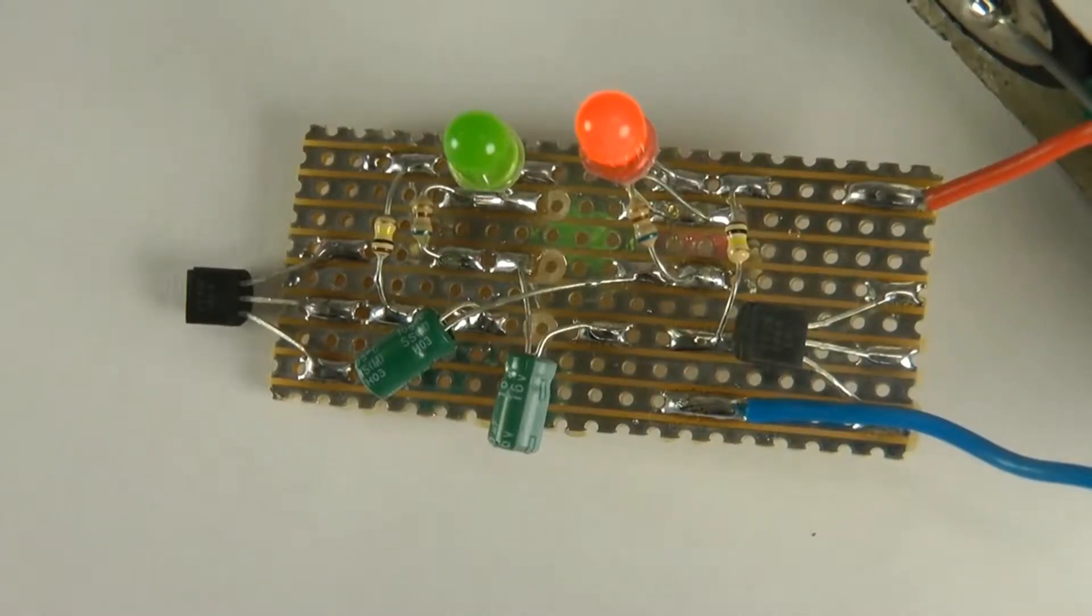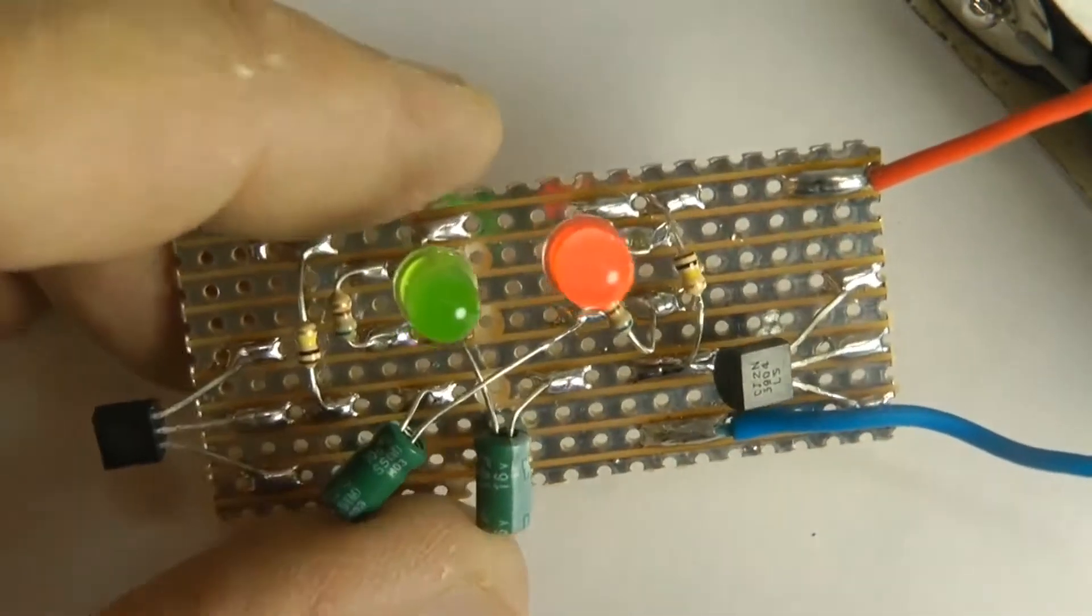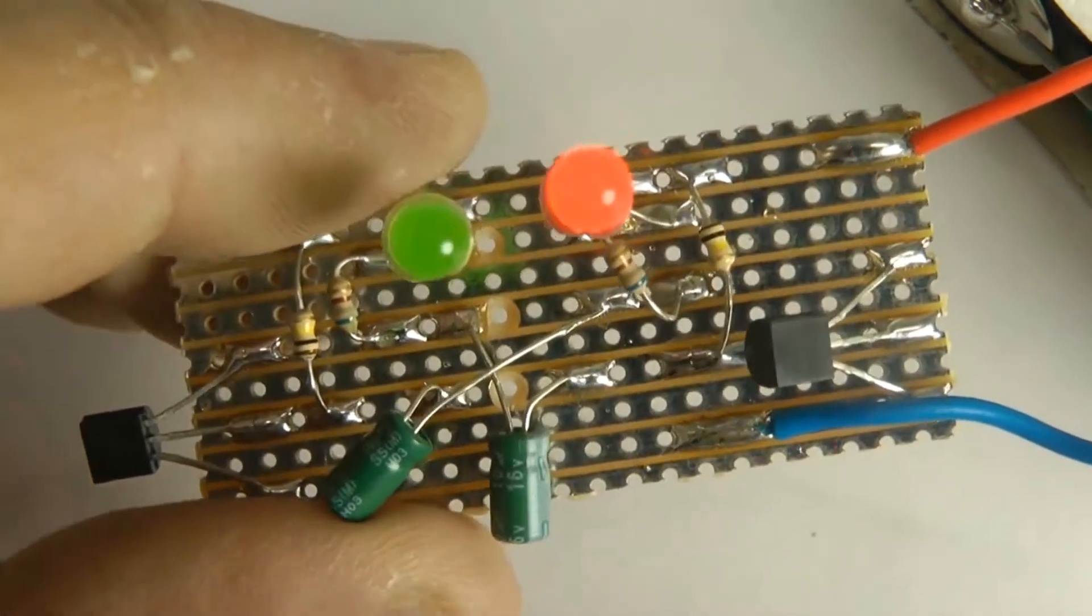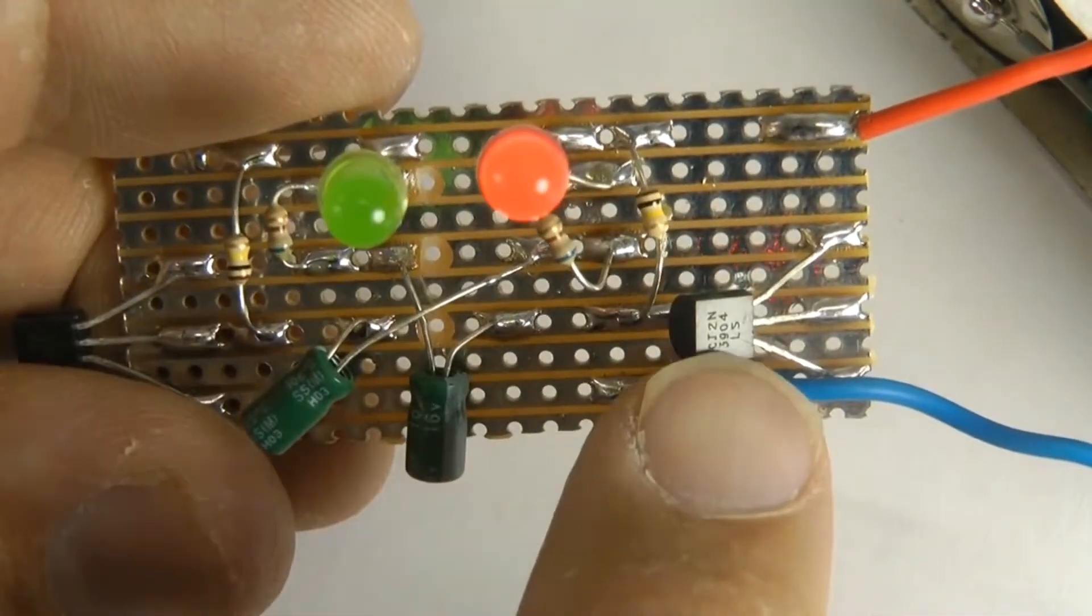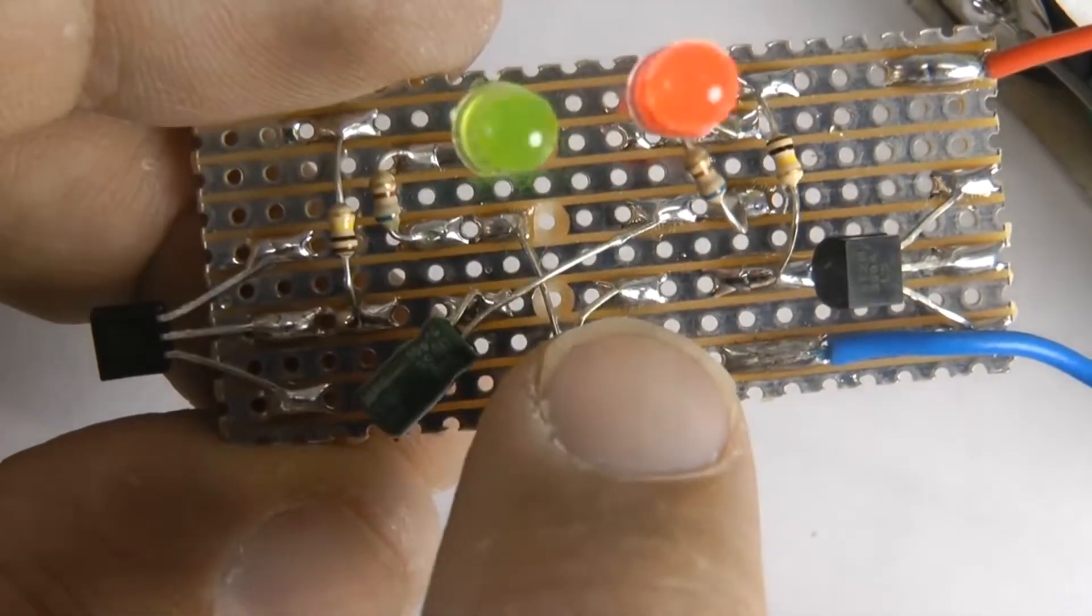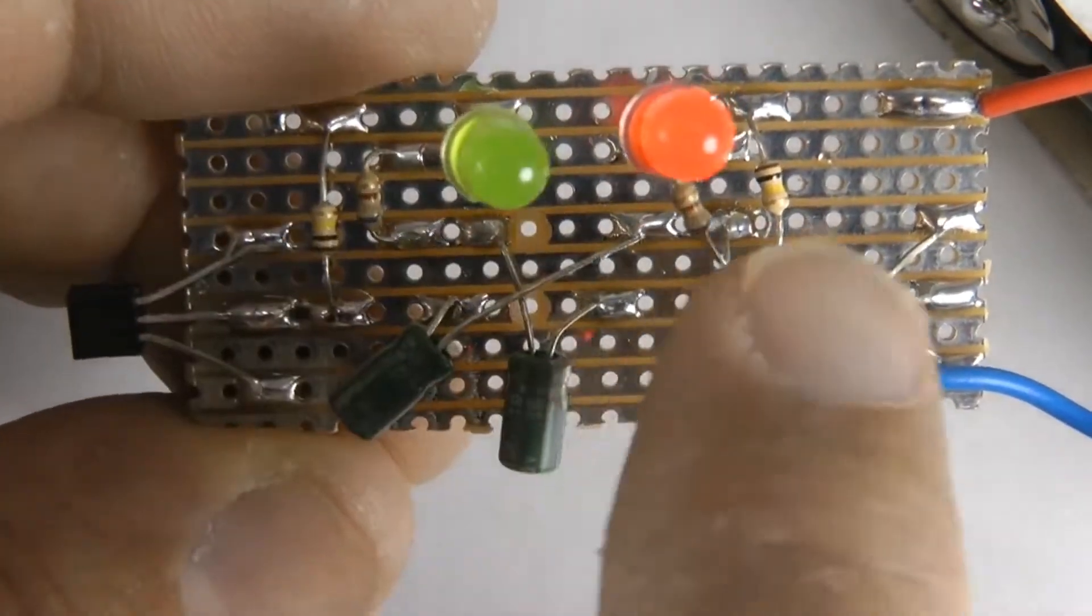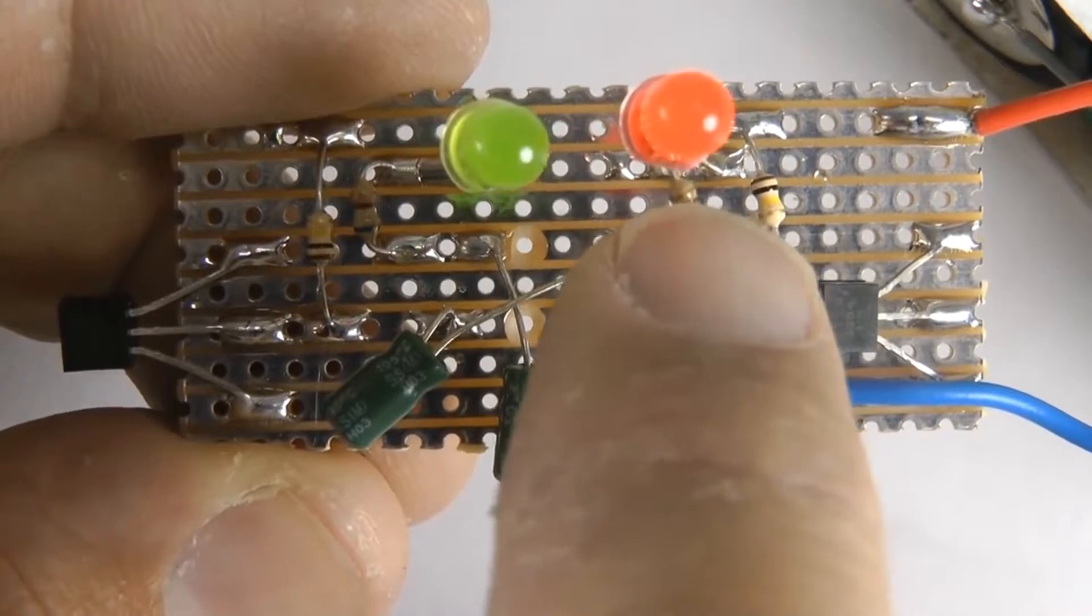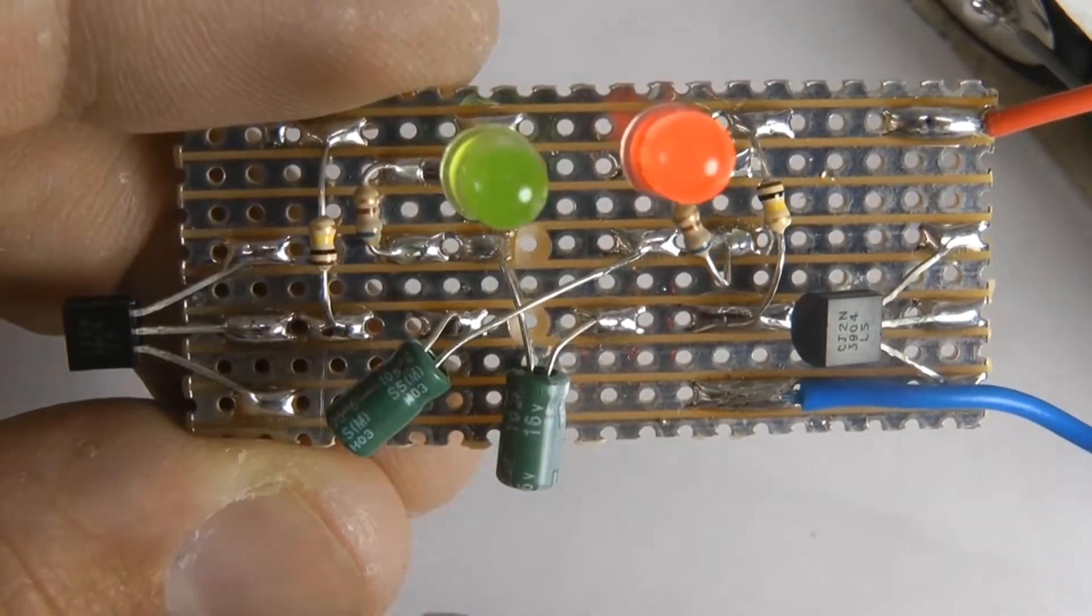Today we're going to be making a two transistor, two LED flasher circuit. You'll see here we've got an NPN transistor there, an NPN transistor there, a pair of capacitors here, and a pair of resistors there, and we've got current limiting resistors over here.